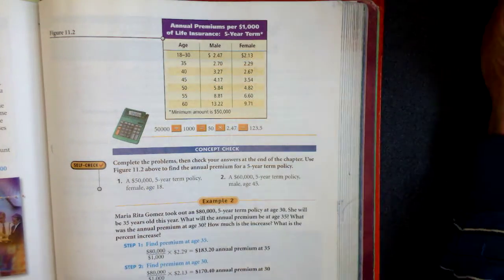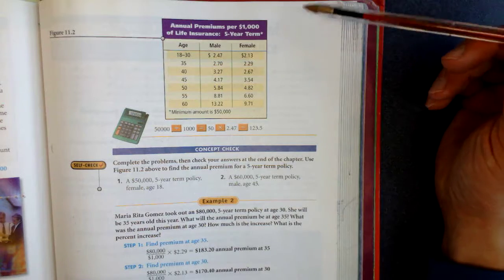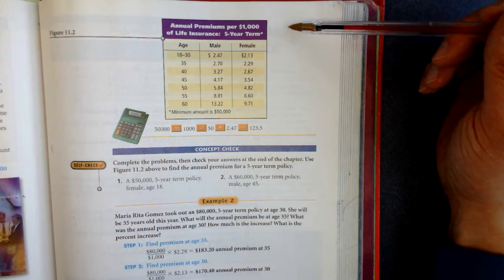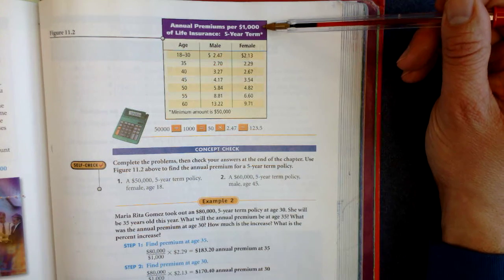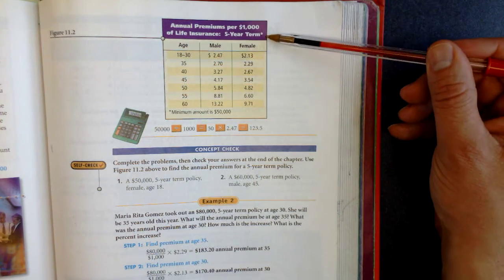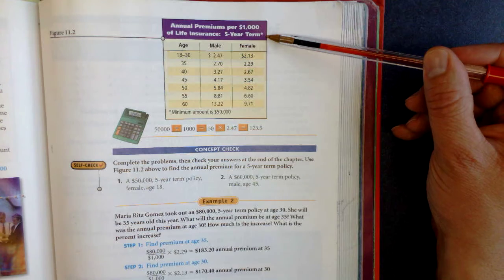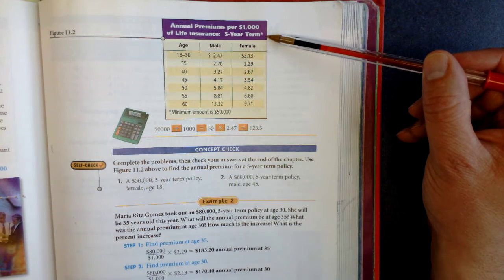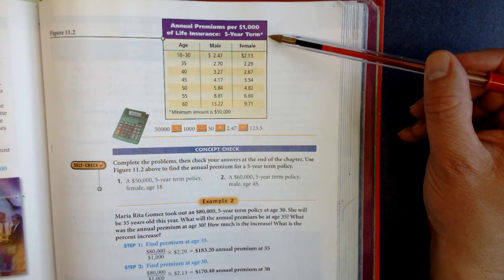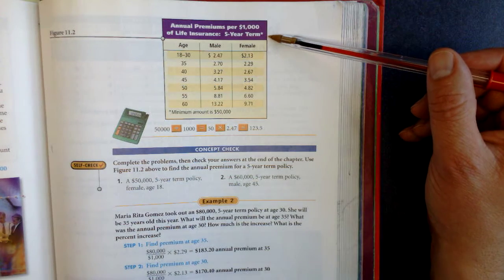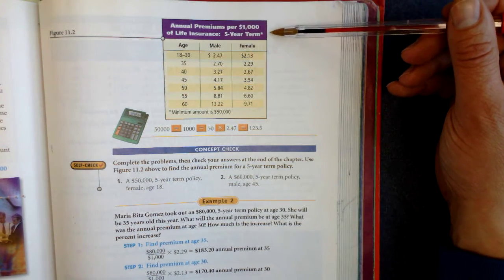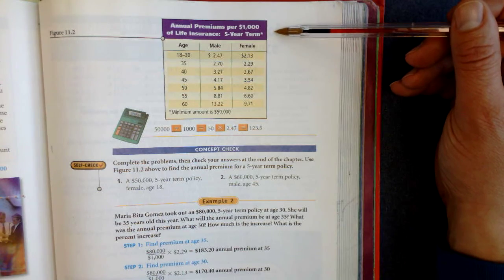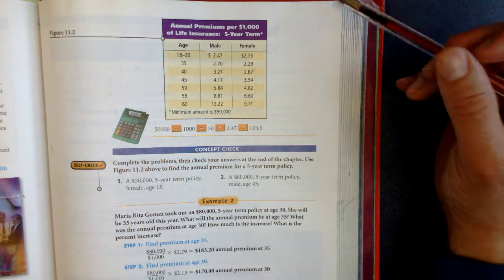We've got a chart here and this term life insurance chart will show us how much we're gonna pay per year per $1,000 of term life insurance. In this case we're gonna do a five-year term life insurance policy. At the end of five years if the person has not died, the term life insurance expires and they get nothing from it. But if the person were to die within those five years they would get the amount from the life insurance company.